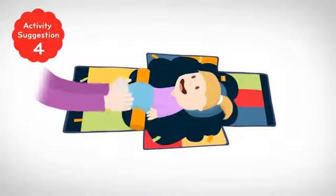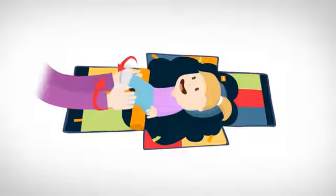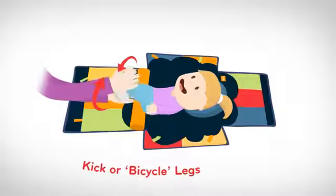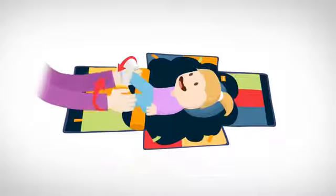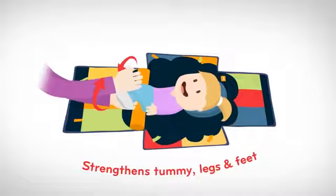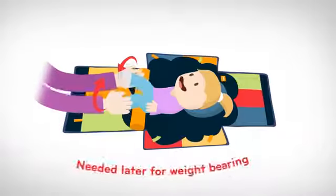One of Charlotte's favourite exercises is to bicycle her legs. I hold onto her feet and help her to kick or bicycle her legs. This helps to strengthen her tummy, legs and feet, and it's also a movement that's needed later for weight bearing.